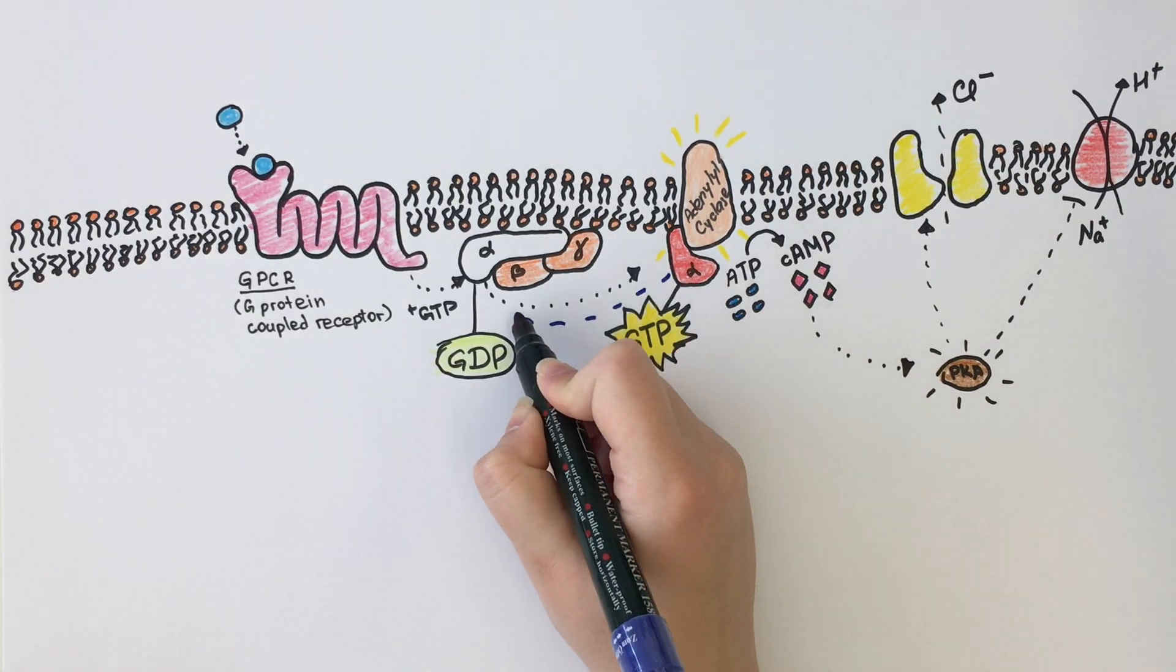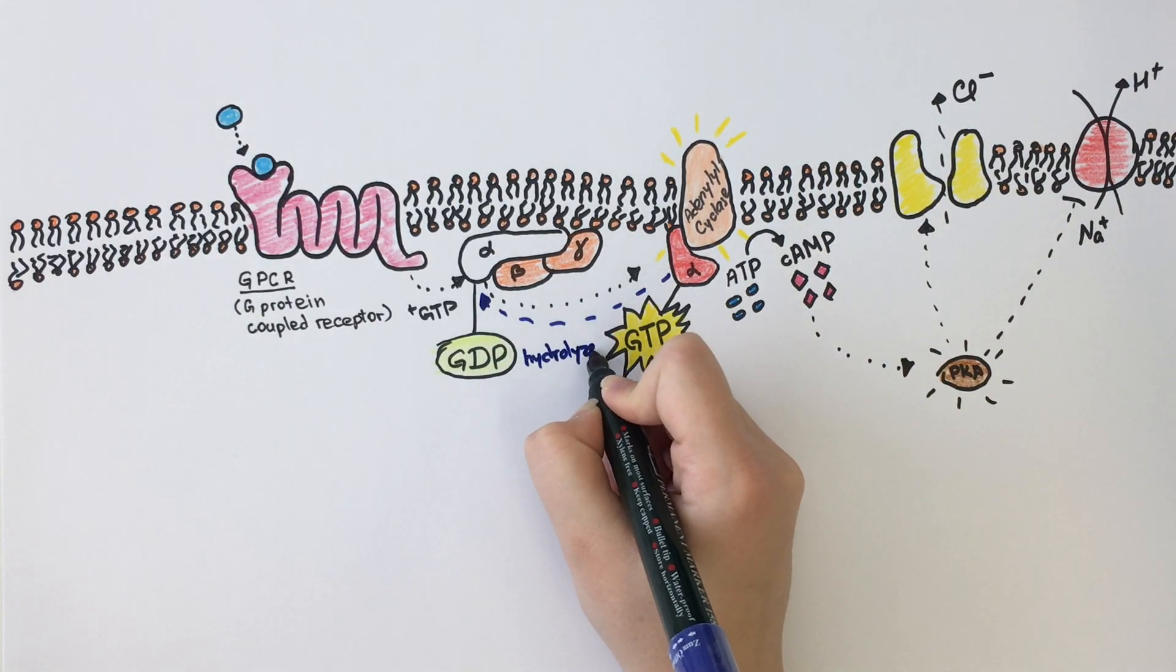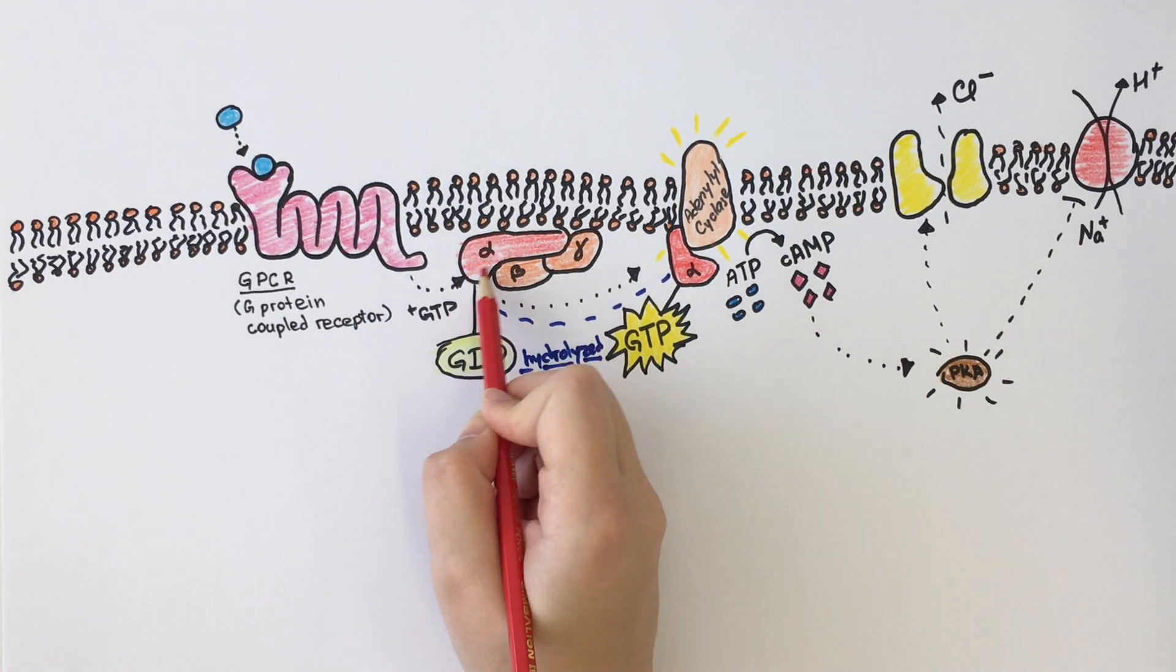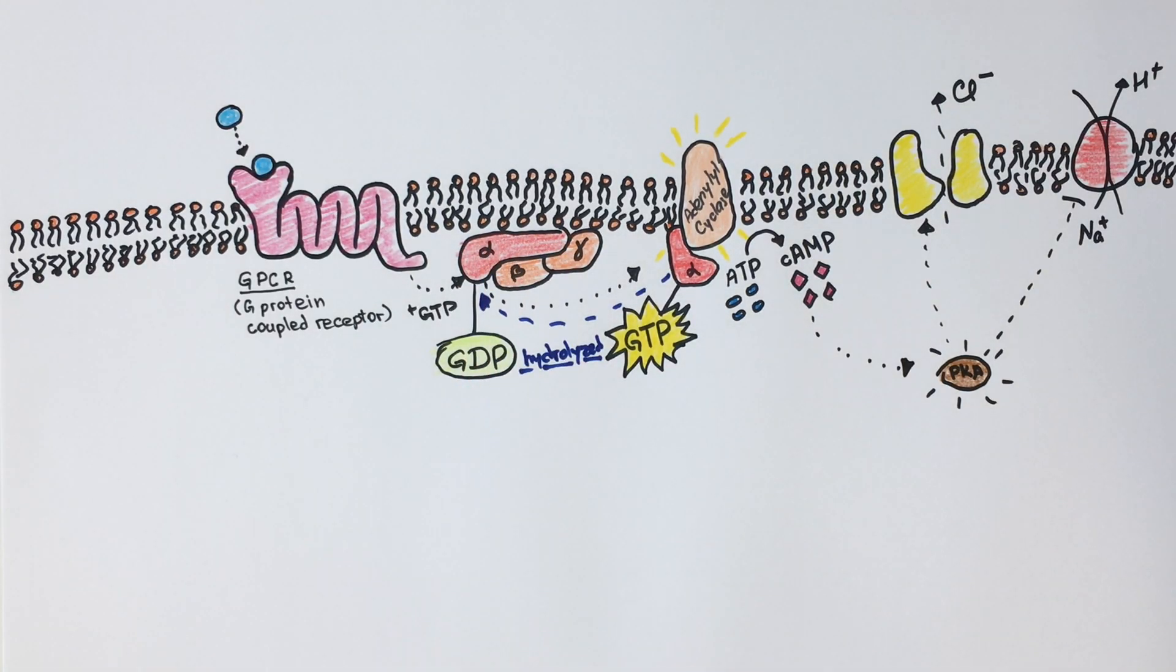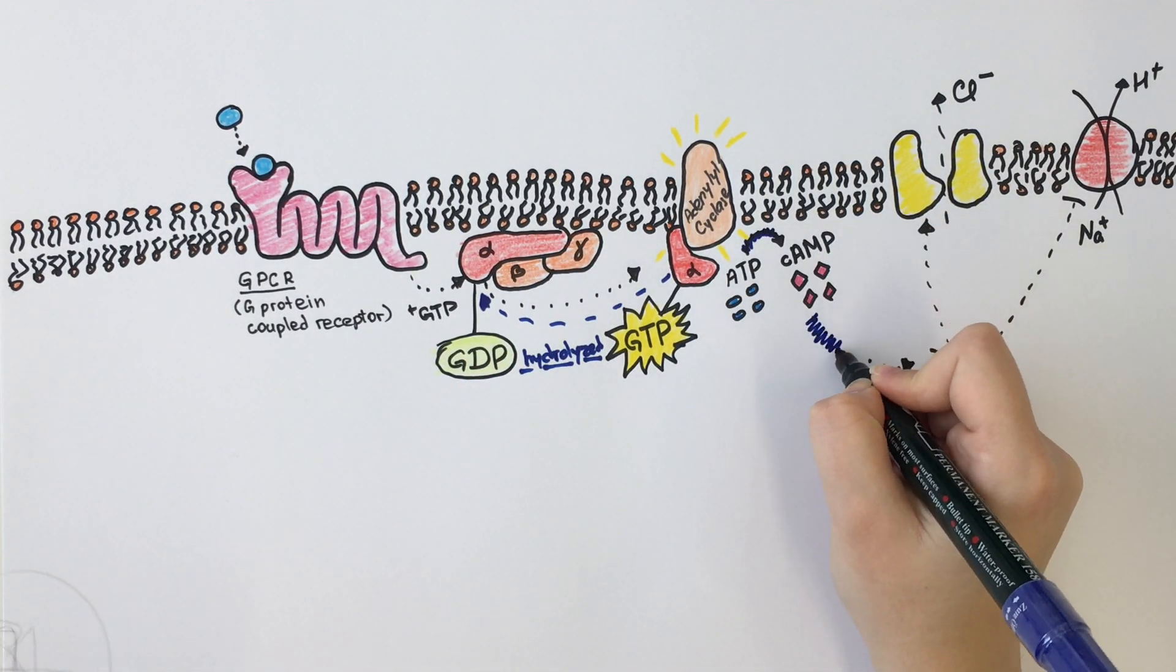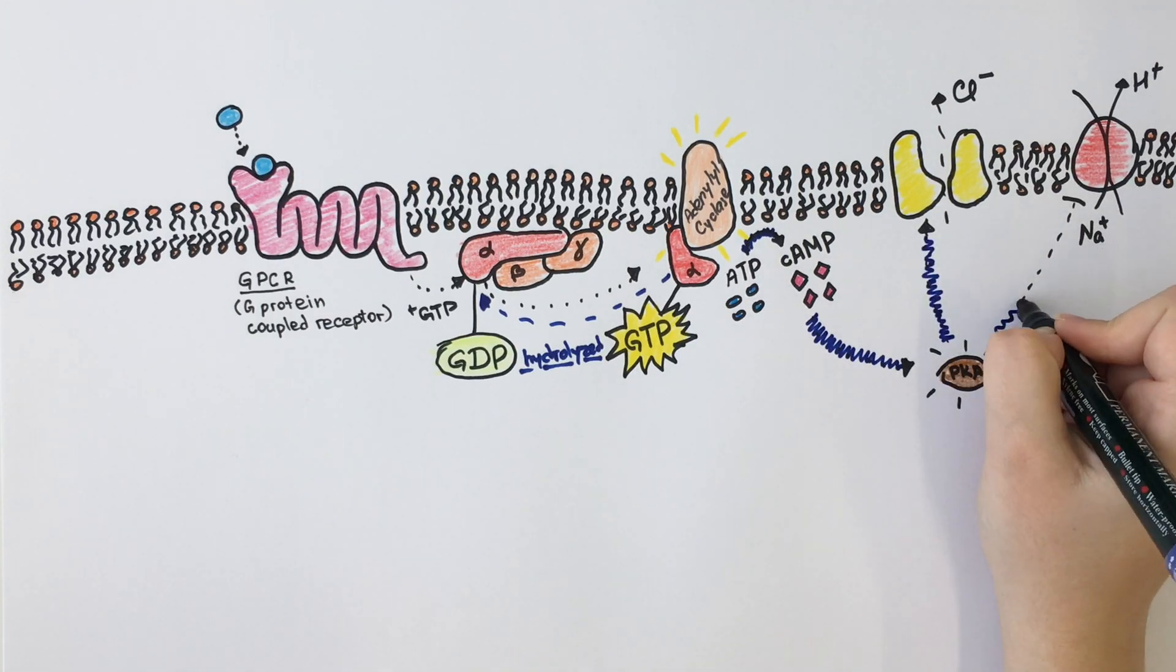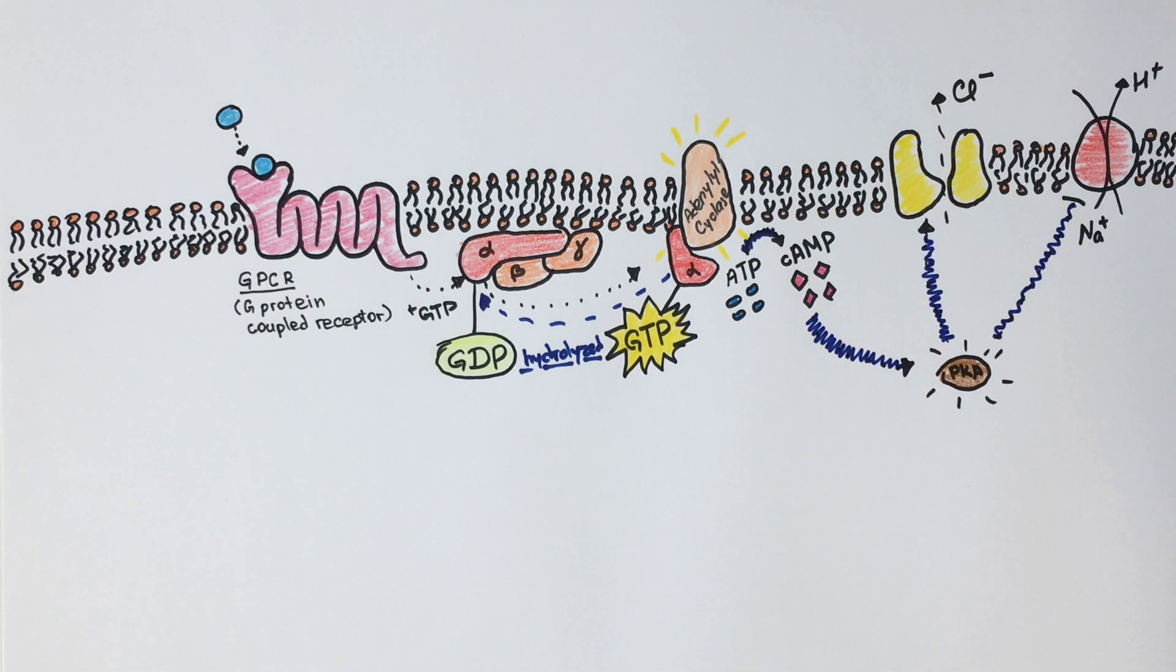Under normal circumstances, after a while, the GTP is hydrolyzed to GDP, G-alpha recombines with the beta and gamma subunits, and adenylyl cyclase is deactivated. The cyclic AMP production is also stopped, so the signal is turned off and the cell returns to its equilibrium state.